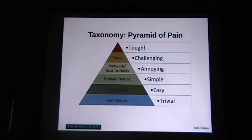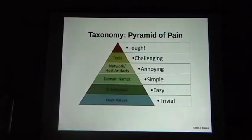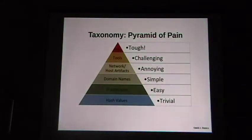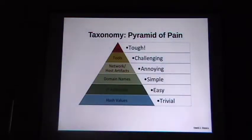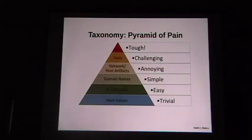There is a guy named David Bianco at FireEye who has a great concept called the Pyramid of Pain. The Pyramid of Pain is the concept that the lower you are on the pyramid, the easier it is for you as an incident responder or intel analyst to get that information — but it's also much easier for your adversary to change it. File hashes are trivial to identify: you get a piece of malware, run your hash, and you have it. It's also really easy for the adversary to recompile with almost anything changed, and you see a completely different hash.